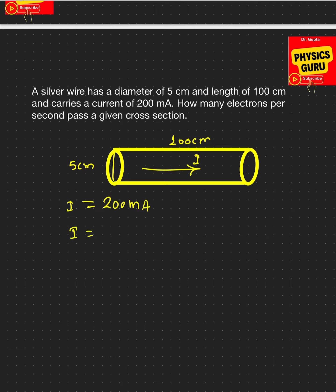If you look at the relation, the current by definition is charge per unit time. And what is the charge? The charge is n times e, the number of electrons that passes through a given cross-section times the charge of the electron, divided by t. And if you have to find out the number of electrons per unit time...